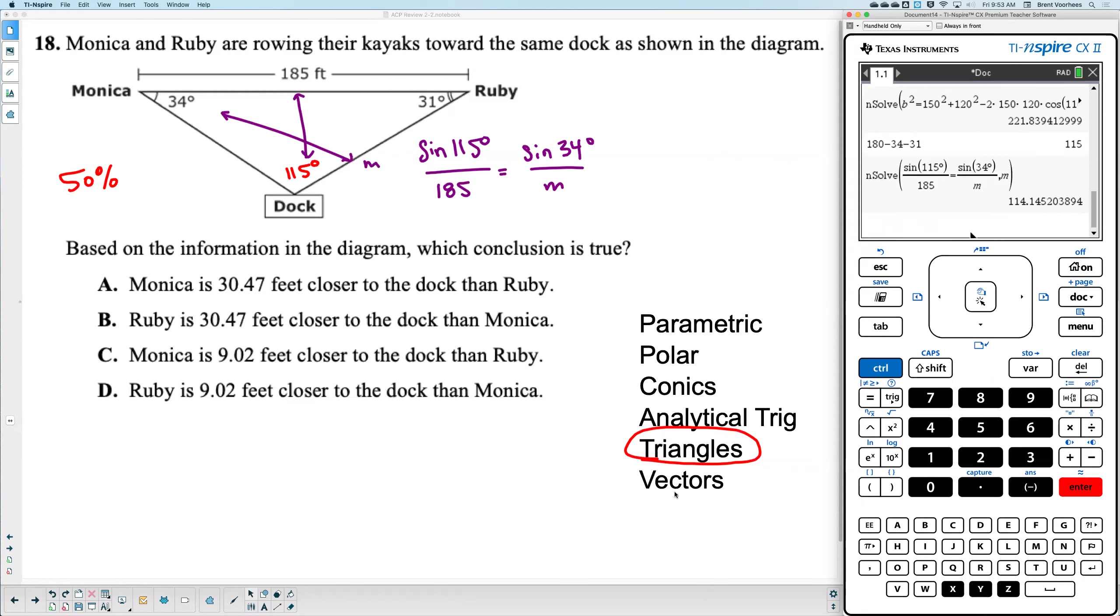All right, what did you get there, Miller? All right, I agree. I got 114 point. They used two decimals, so I'm going to say 114.14 or 0.15? 0.15. Let's go 114.15.